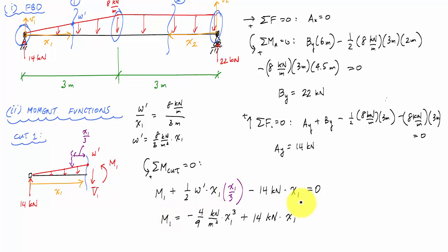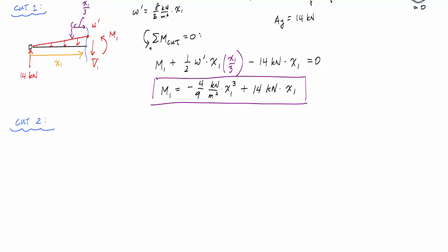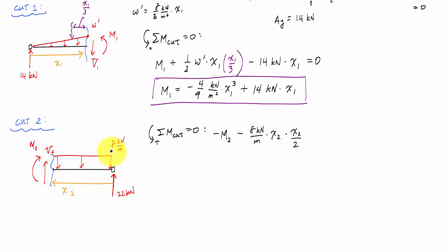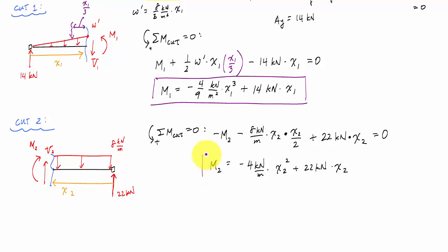For cut two, I draw the free body diagram from the right side. I have internal moment M2 and shear V2. Taking moments about the cut, the force resultant times the arm x2 over 2 — since it's a uniformly distributed load rectangle — gives the second moment function M2.